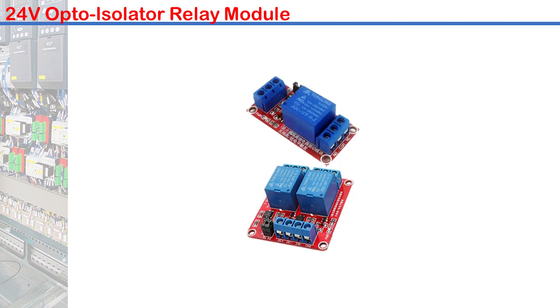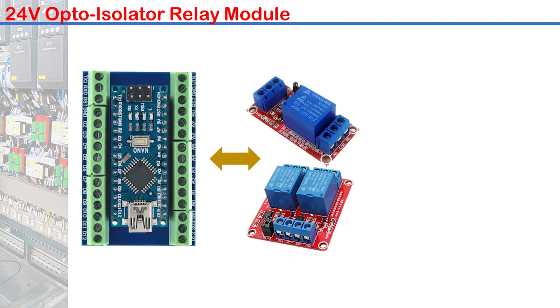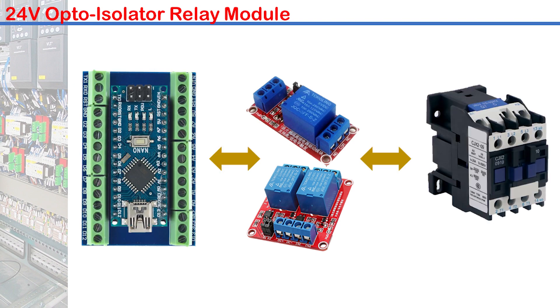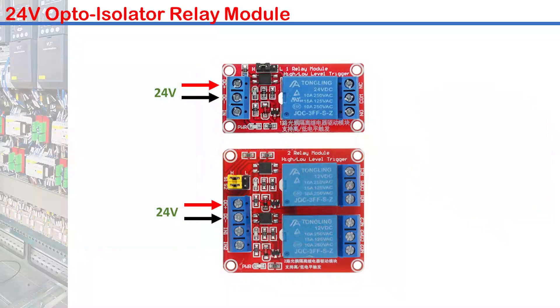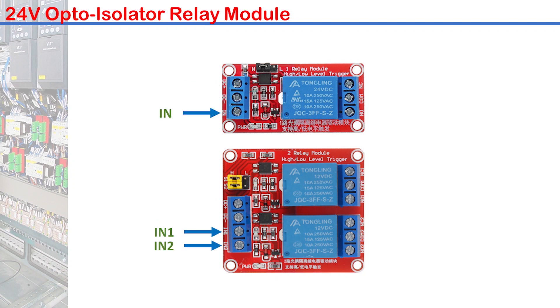This opto-isolator module with a relay will interface the Nano with a contactor due to the amount of current required by the contactor coil. 24V is supplied to these terminals. Here are its inputs which can be set to high or low level triggers with these jumpers.